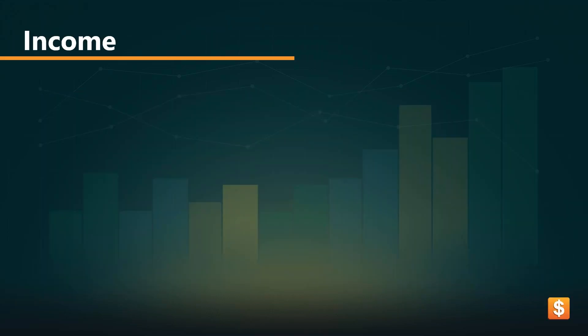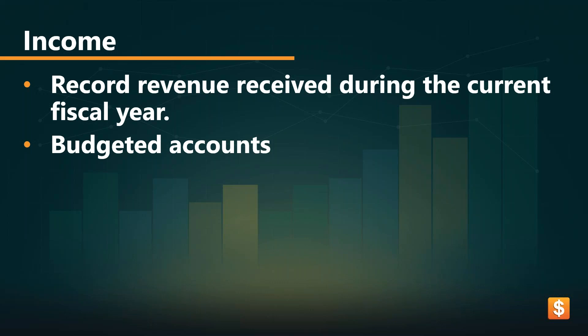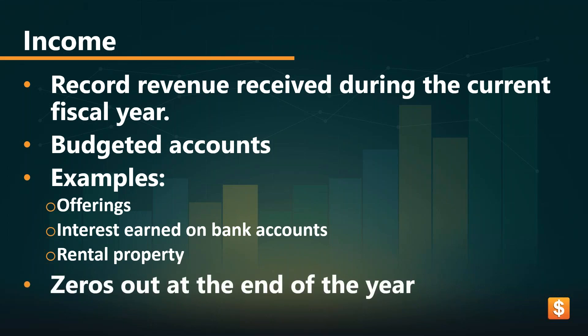Mentioning income accounts — these are the accounts you use to record your revenue during the current fiscal year. They are budgeted, so you can create a budget if needed. Any income can be recorded whenever you actually receive those funds — such as offerings, interest on bank accounts, or rental property. It's also important to remember that, unlike restricted funds, income accounts zero out at the end of the year. Once that fiscal year is complete and a new one opens, that income goes down to zero so it can start with a clean slate.